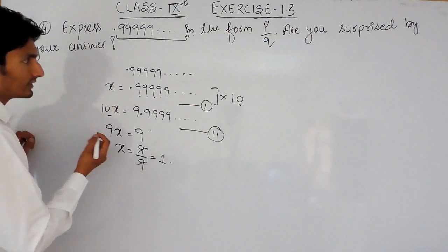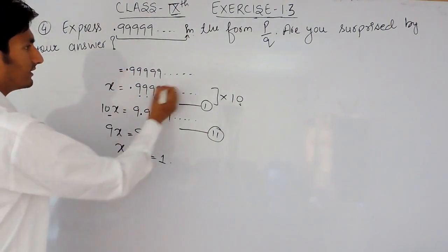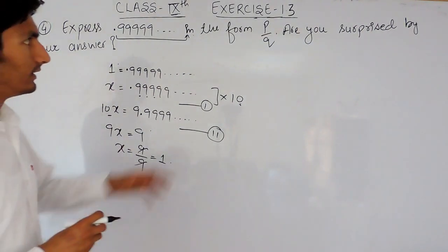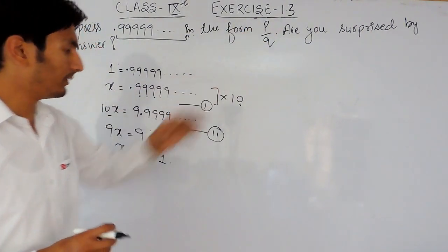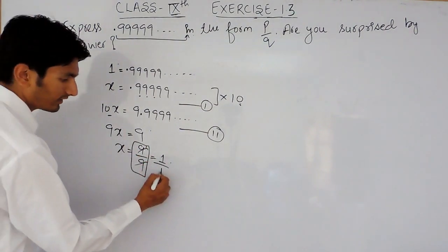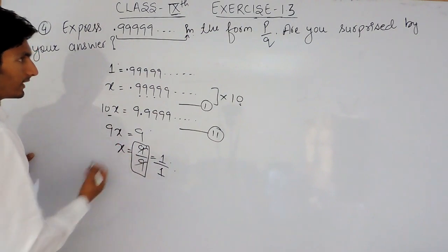Or, you can say that the value of this will be equals to 1, and this is in the form of P upon Q, so that is 9 upon 9 or you can say 1 upon 1.